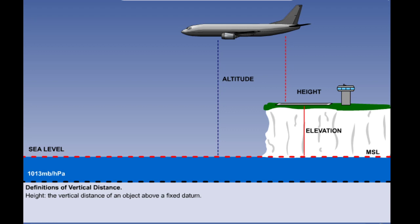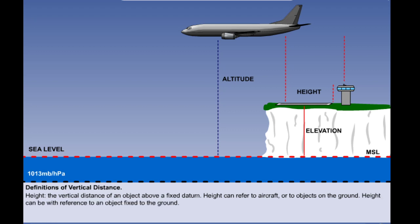This leads on to the next definition which is height. Height is the vertical distance of an object above a fixed datum. Height is always less than altitude unless the elevation is negative. However, height can refer to either movable objects such as aircraft or fixed objects such as a control tower. A tall obstruction such as a TV mast can be quoted both as a height above the ground on which it stands and an elevation above mean sea level. Where height refers to vertical distance of an aircraft, it does not have to be with reference to the ground.